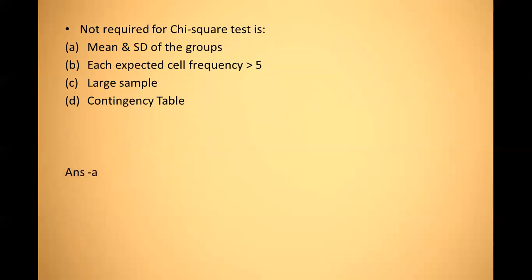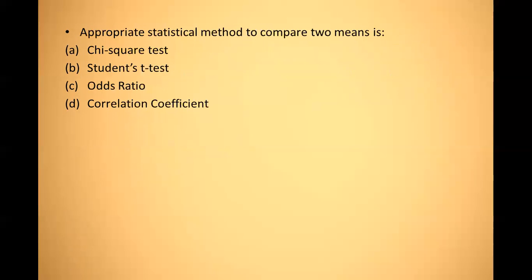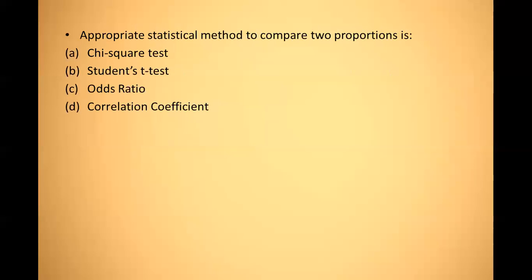Which is the appropriate statistical test to compare two means? For two means, Student's t-test is done; for two proportions, chi-square test is done. Answer: Student's t-test. Next: the appropriate test to compare two proportions — for two proportions, chi-square test is the answer.